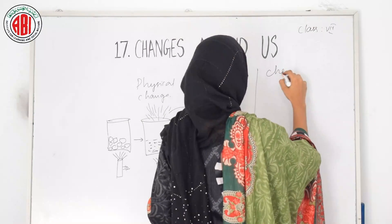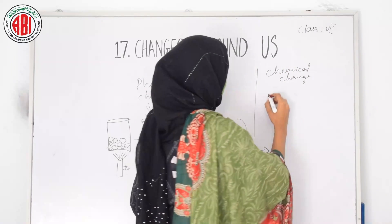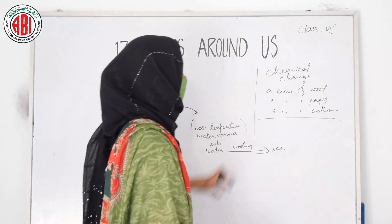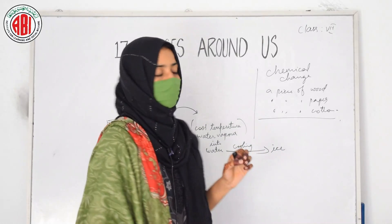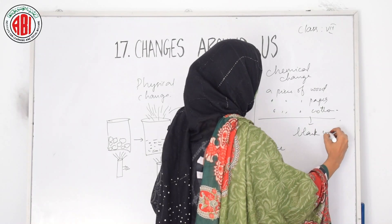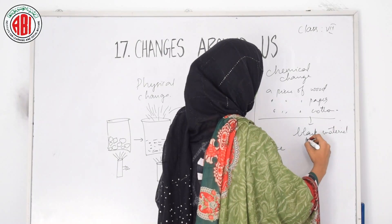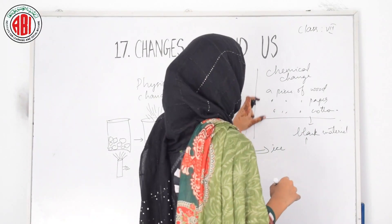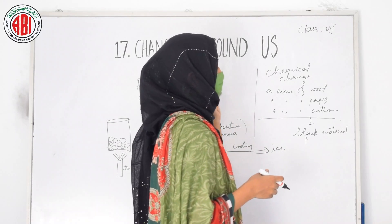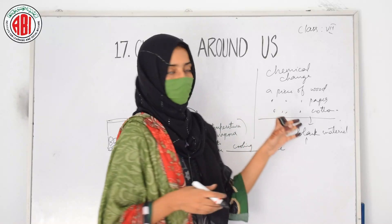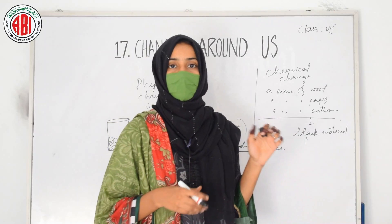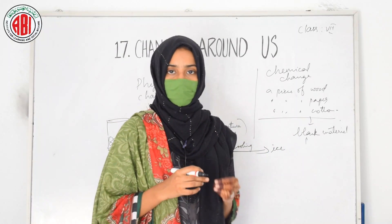Now let us do an activity to understand chemical change. We take a piece of wood, a piece of paper, and a piece of cotton. After taking all these materials, burn them. At the end you will find a black color material is formed. This black color product formed after burning is a new product, different from the original materials. The change in substance along with formation of a new product is called a chemical change.